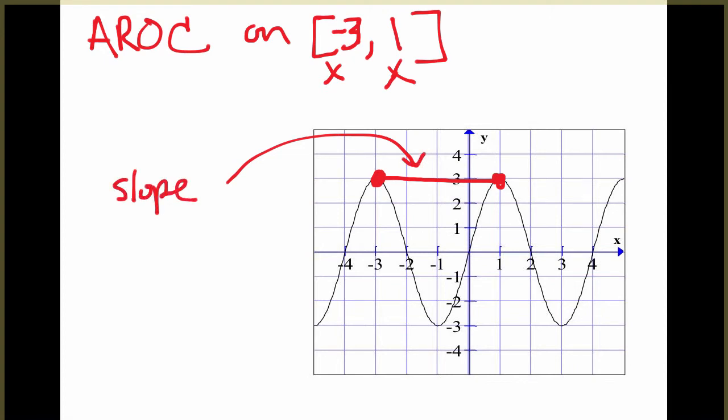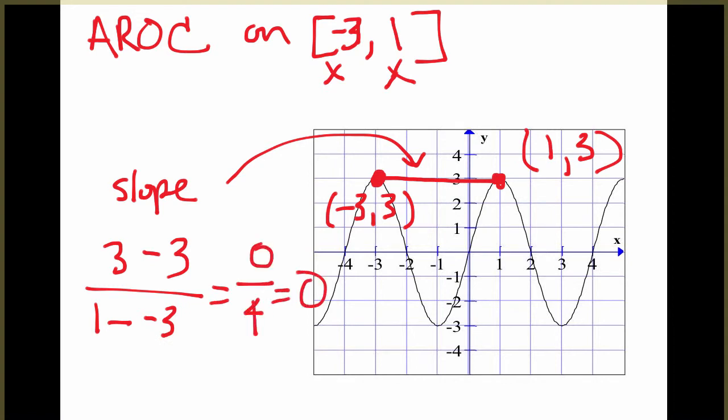So essentially we're trying to find the slope of this line. And you can use the same idea that we just did. This is the point negative 3, 3, and this is the point 1, 3, and we can find the slope between those two points by doing 3 minus 3, 1 minus a negative 3, which is 0 over 4, or just 0. And that makes sense because it's a horizontal line.